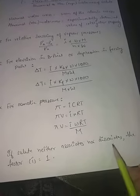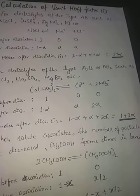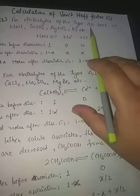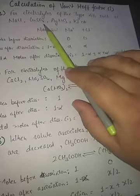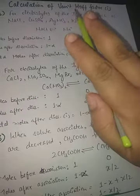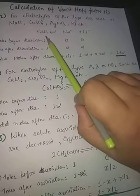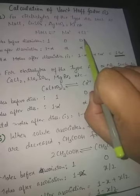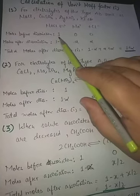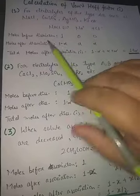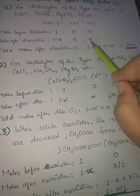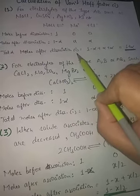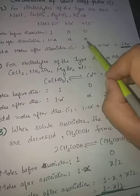Now let's see how to calculate the Van't Hoff factor for electrolytes. For an AB-type electrolyte — meaning it dissociates to give two ions only, like NaCl → Na⁺ + Cl⁻, CuSO₄ → Cu²⁺ + SO₄²⁻, AgNO₃ → Ag⁺ + NO₃⁻ — taking NaCl as example: before dissociation there is 1 mole of NaCl and zero moles of Na⁺ and Cl⁻. After dissociation it becomes (1 − α), α, α respectively. Total moles after dissociation = (1 − α) + α + α = 1 + α.